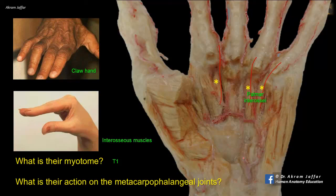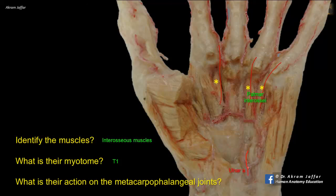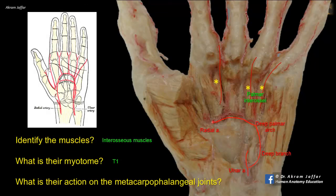This is a good specimen to show the ulnar artery dividing into a superficial branch and a deep branch. Note here the deep branch of the ulnar artery making an arch — the deep palmar arch. All the long flexor tendons have been removed. This arch is mainly formed by the radial artery, which appears from the dorsum of the hand between the two heads of the first dorsal interosseous muscle, and joins the deep branch of the ulnar artery to form the deep palmar arch. It is the radial artery that is the main contributor to the deep palmar arch.